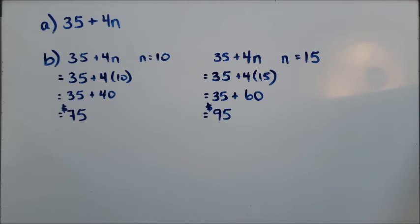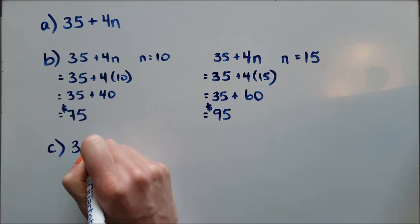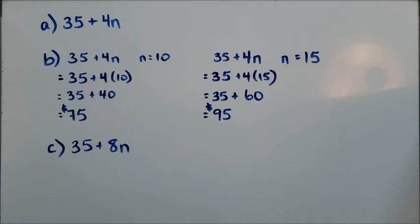If the cost of the food doubles, so now it is $8 instead of $4, I need to change my equation or my expression. Instead of 35 plus 4n, we now need to have 35 plus 8n.